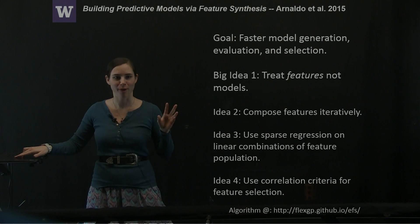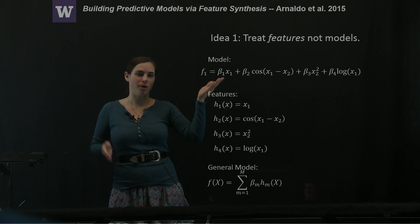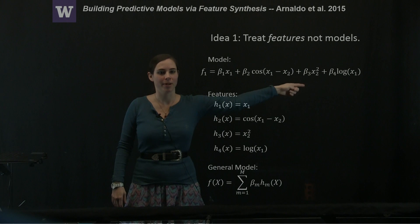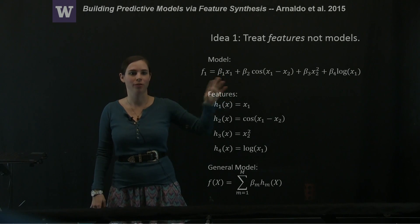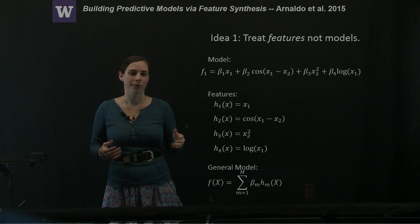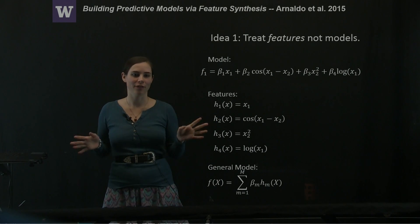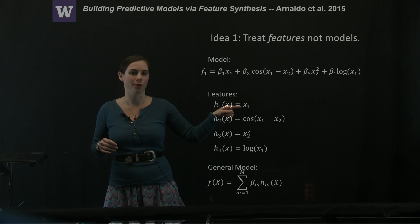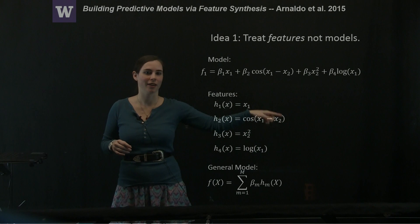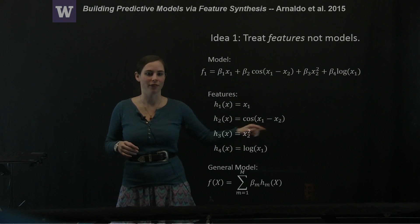Let's talk about what we mean by features not models. If I write down a model F1 as this combination of terms, you'll note that basically each one of these terms could be considered a feature. So we're now going to do all of our evolution and all of our evaluation on these features. So x1, cosine for example, x2 squared, the log of x1.